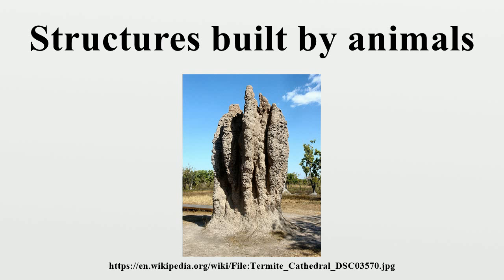Animals create structures primarily for three reasons: to create protected habitats, i.e., homes; to catch prey and for foraging, i.e., traps; and for communication between members of the species, i.e., display. Animals primarily build habitat for protection from extreme temperatures and from predation. Constructed structures raise physical problems which need to be resolved, such as humidity control or ventilation, which increases the complexity of the structure.